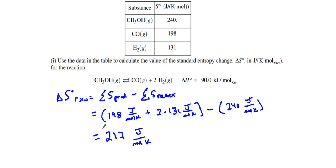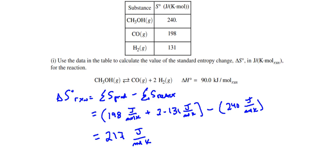Why is it positive? Why are we increasing in entropy? You can see the molecules are going from one mole of gas into three moles of gas, which means the reaction has greater dispersion of particles, and therefore it is a positive 217 J/mol·K — that is the entropy for the reaction.